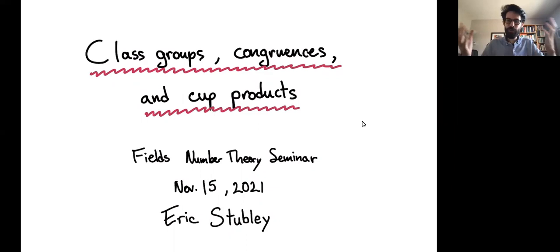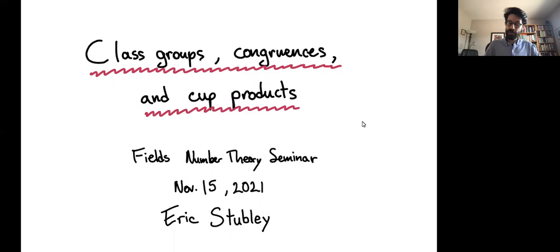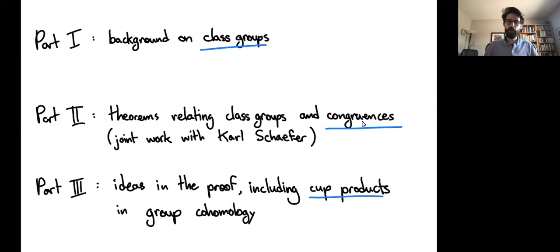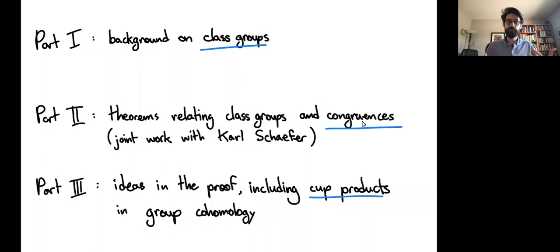Throughout the talk I want to really encourage you to ask questions at any point. I have the Zoom chat open on another window, so if you want to put questions in the chat I will see those and address them, or of course if you want to unmute and ask questions that way I'm happy to take questions. The plan for the talk: I want to start with some background on class groups and classical results to set the stage, then discuss new results — joint work with Carl Schaeffer — including new congruences. Finally, I'll walk through some of the ideas in the proof, giving a concrete way of thinking about cup products in Galois cohomology and how that ties into what we're studying.